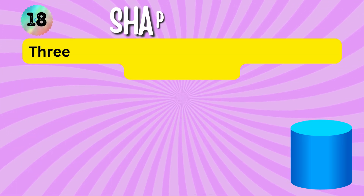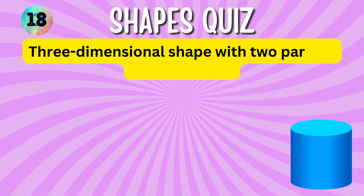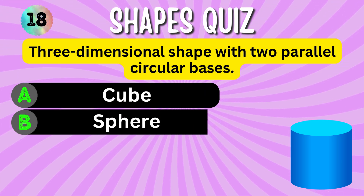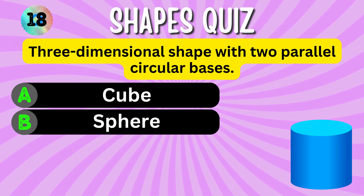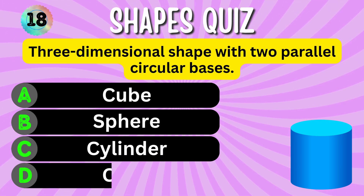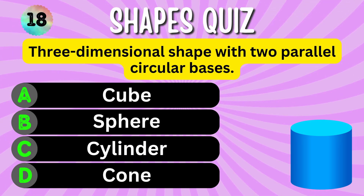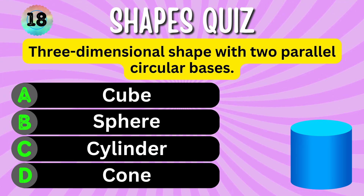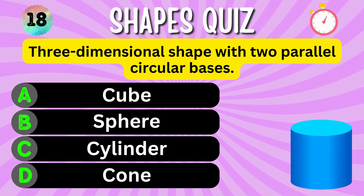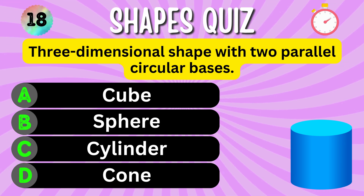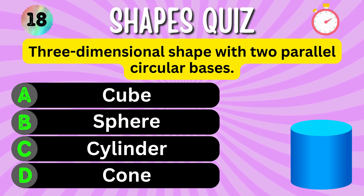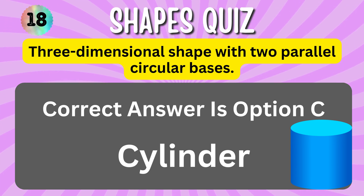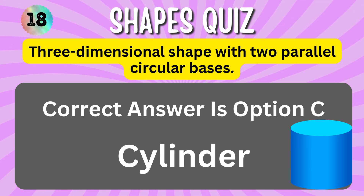Three-dimensional shape with two parallel circular bases. Option A. Option B. Option C. Option D. You have 5 seconds to choose the correct answer. Your time starts now. The correct answer is Option C, Cylinder.